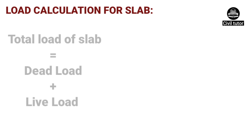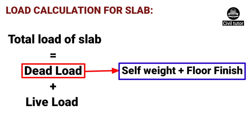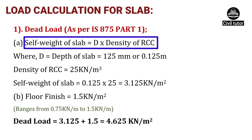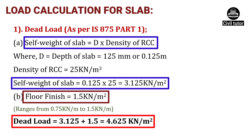The total load of a slab is the summation of the dead load and the live load. The dead load includes the self weight of the slab plus the floor finish, calculated as per IS 875 Part 1. The self weight of the slab is calculated by multiplying the depth of the slab by the density of RCC: 125 mm × 25 kN/m³ = 3.125 kN/m². The floor finishing is assumed to be 1.5 kN/m², so the total dead load is 4.625 kN/m².